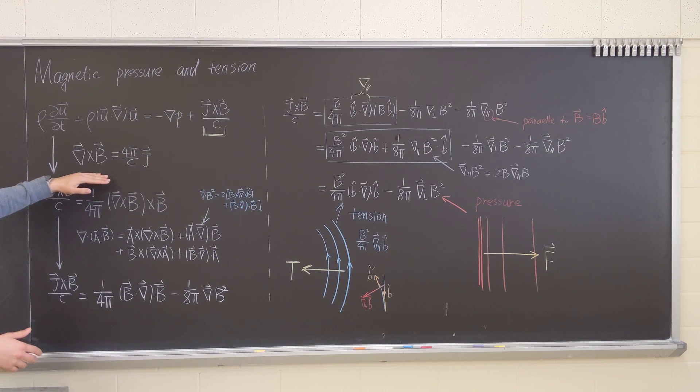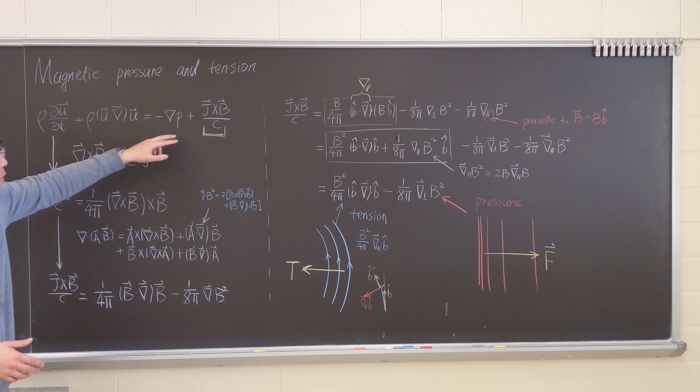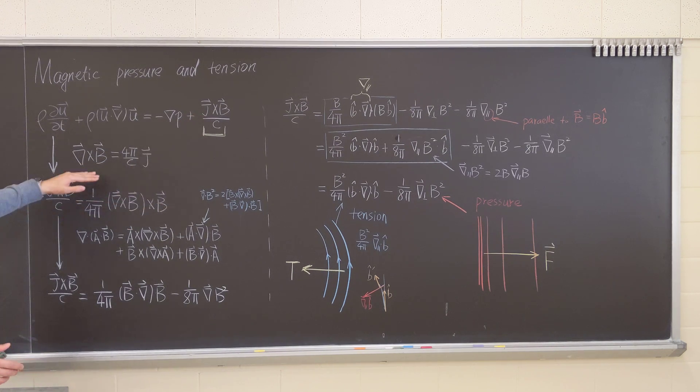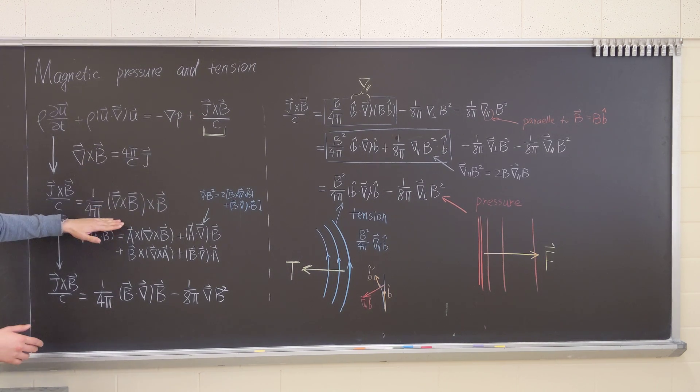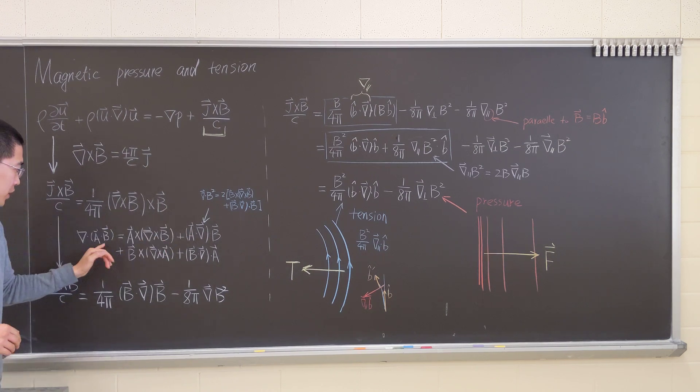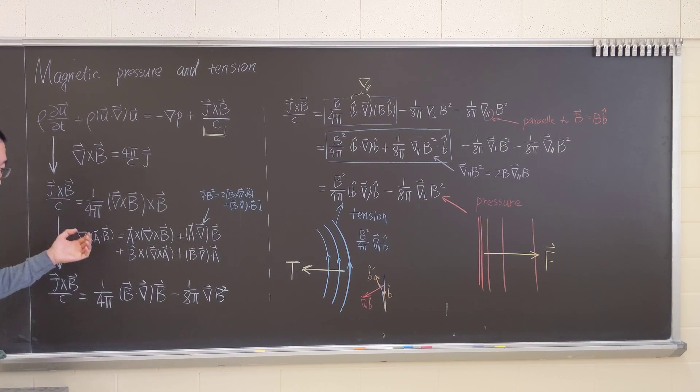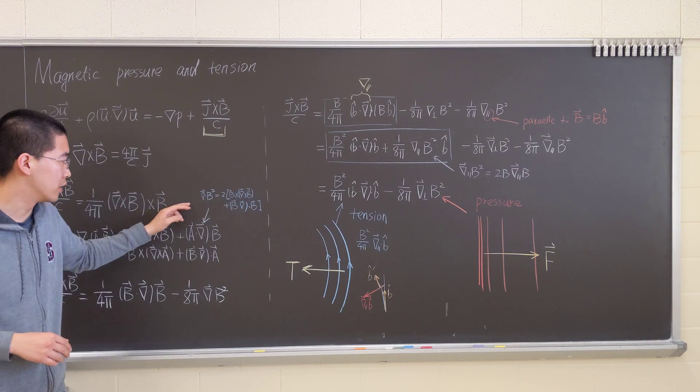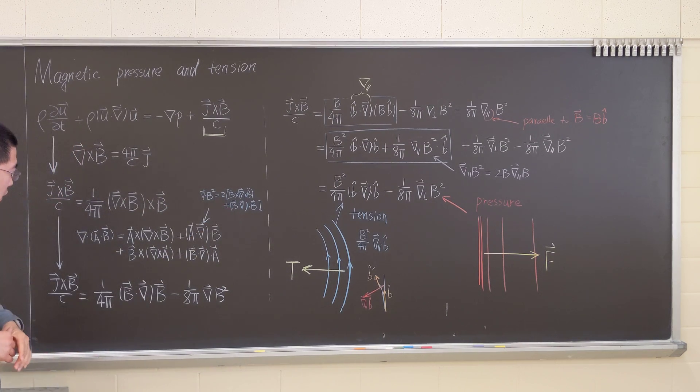Let's first plug in Ampere's law, substitute J, and we arrive to this equation. We utilize this vector identity and basically substitute A and B to B, both are B. And we have this expression. Then the J cross B over C will reduce to this expression.